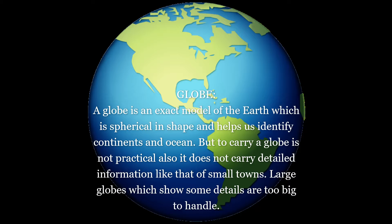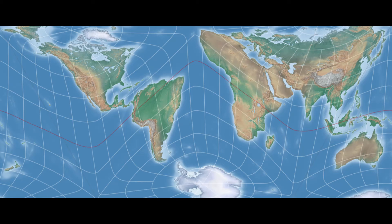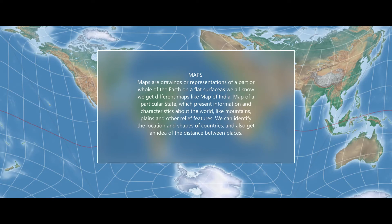Maps showing boundaries of countries, states, and important cities are called political maps. Maps showing only the relief features of the land like plateaus, mountains, plains, and rivers are called physical maps. Weather maps are used by meteorologists who study weather conditions for forecasts.